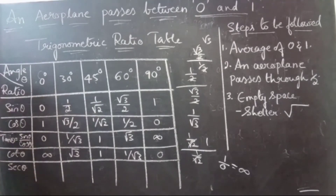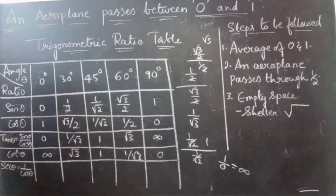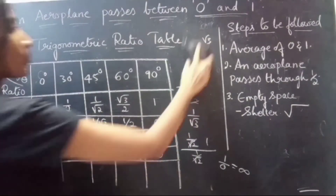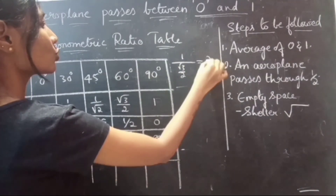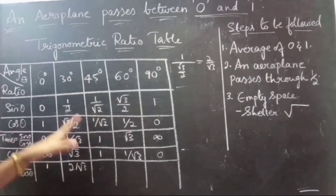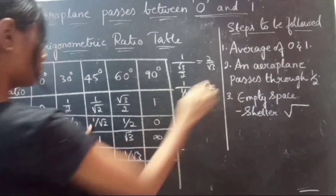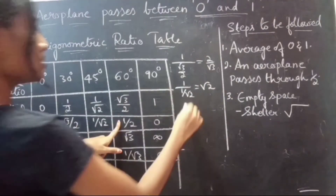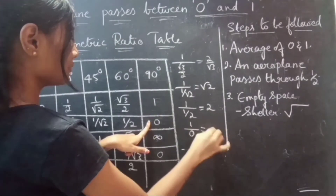Next, for secant. Secant theta equals 1 by cos theta. So: 1 by 1 is 1; 1 by root 3 by 2 equals 2 by root 3; 1 by 1 by root 2 equals root 2; 1 by 1 by 2 equals 2; and secant 90° is 1 by 0, which is undefined — infinity.